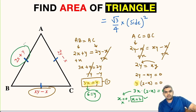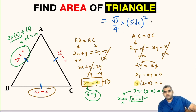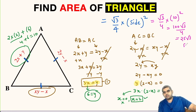Substituting X equals 2 and Y equals 6, the side length is 2 times X plus Y, which is 2 times 2 plus 6, giving 4 plus 6, that is 10 units. Each side has a length of 10 units. Substituting into the area formula: root 3 divided by 4 times 10 squared equals root 3 divided by 4 times 100, which equals 25 root 3 square units. So the area of this equilateral triangle is 25 root 3 square units.